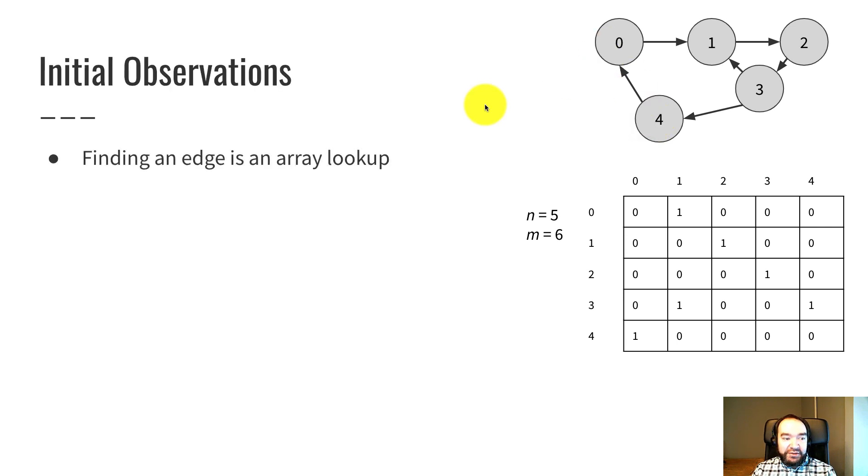So now let's make some initial observations about this. Finding whether an edge exists is an array lookup. And that's going to take constant time. It's really fast. So if I want to ask, is there an edge between one and four? From one to four, I just go to row one, column four.